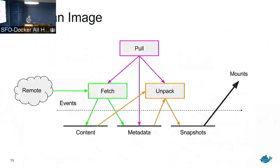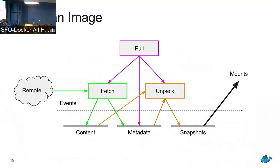This is the data flow diagram for how you actually pull an image inside containerd — as well as somewhat in Docker and somewhat in rkt. You'll find these component themes across all of them, but this is the actual architecture of containerd internally. Each process is color-coded — each one is a storage system you can interact with. We've implemented the content store, a snapshot driver, and a metadata store that's currently in progress.